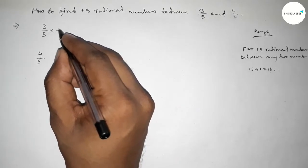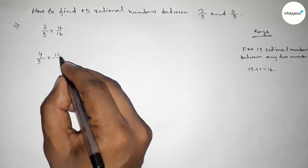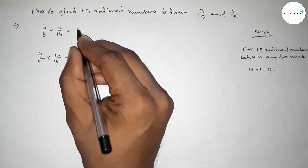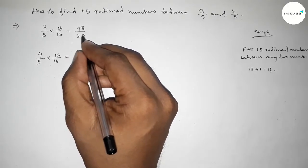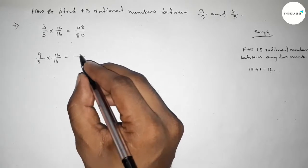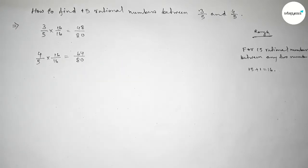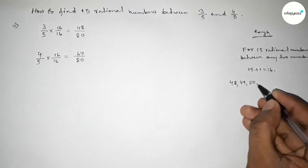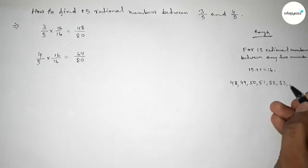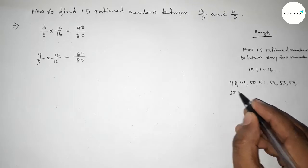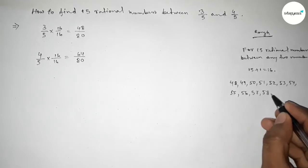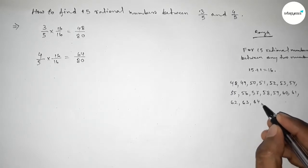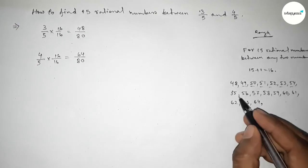Multiplying both numbers by 16: 16 times 3 over 5 gives us 48 over 80, and 16 times 4 over 5 gives us 64 over 80. Now between 48 and 64 we can get 15 integers. Let's write down all the integers between 48 and 64.